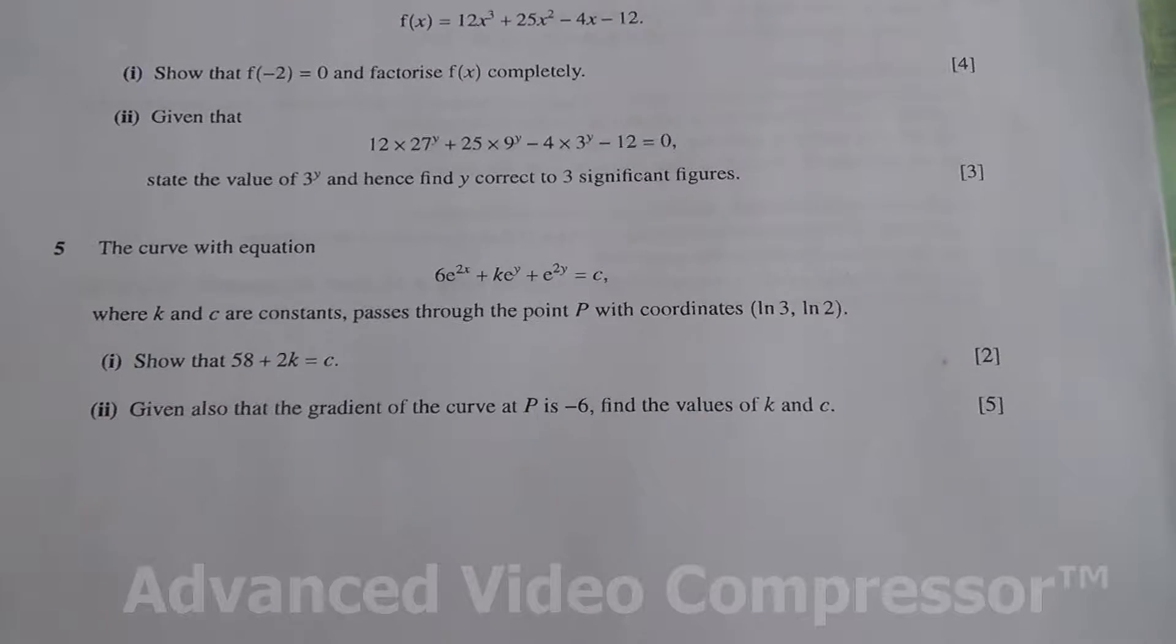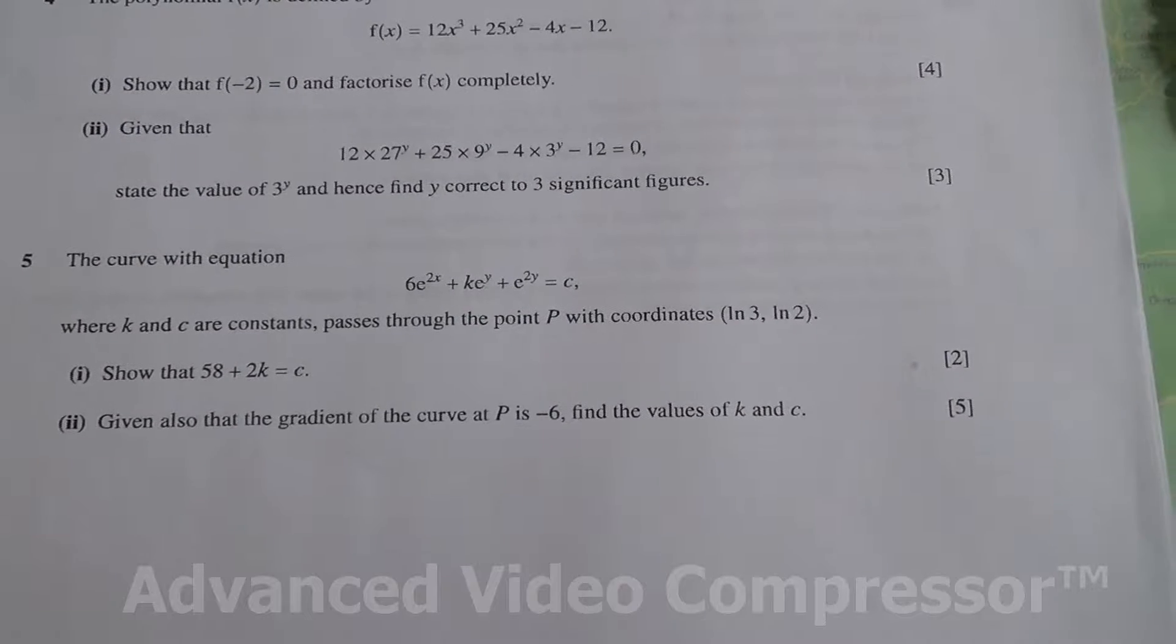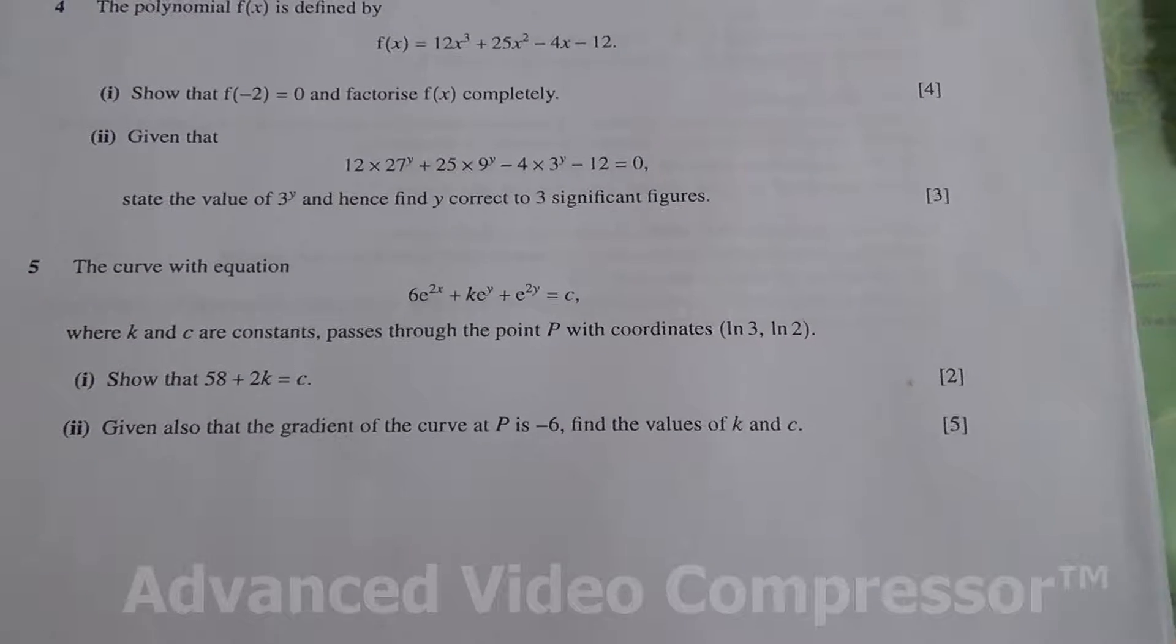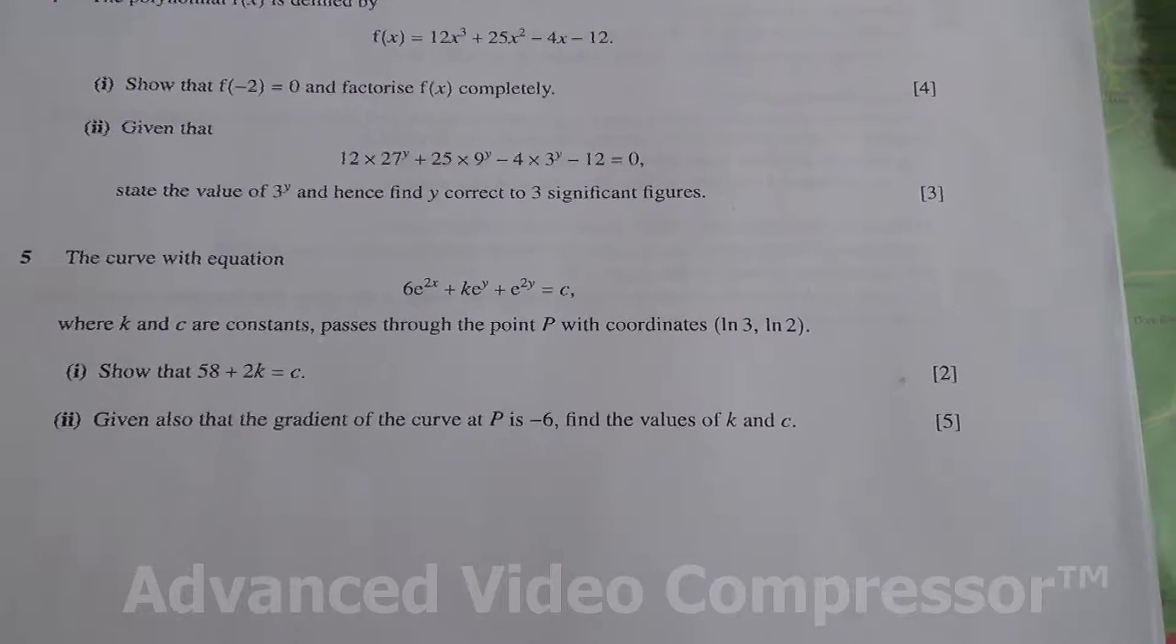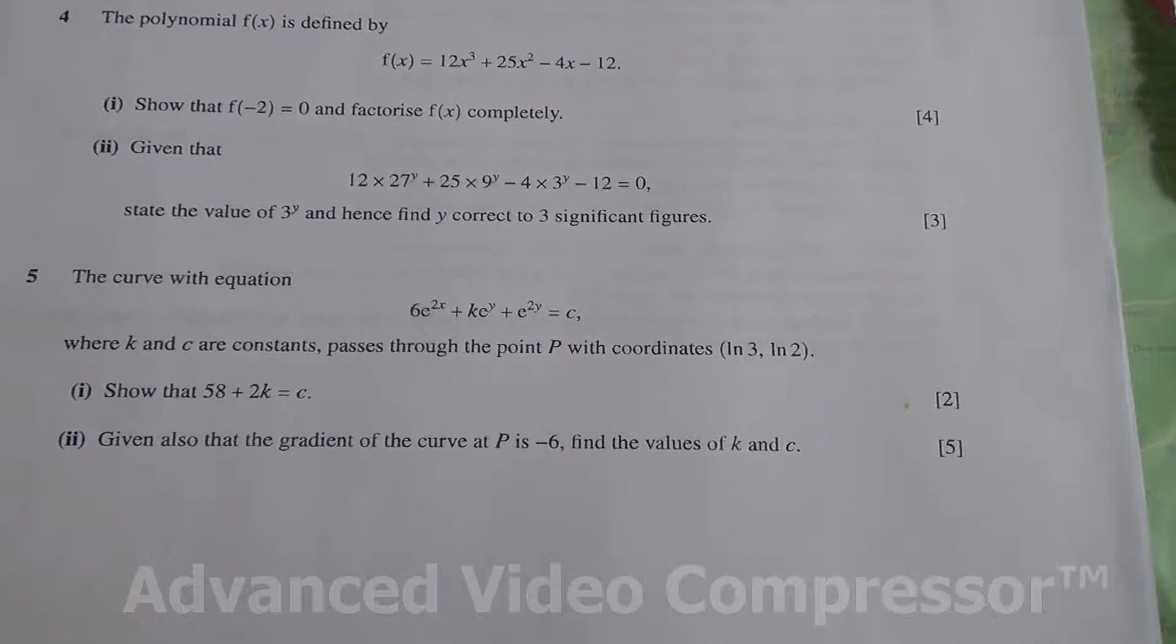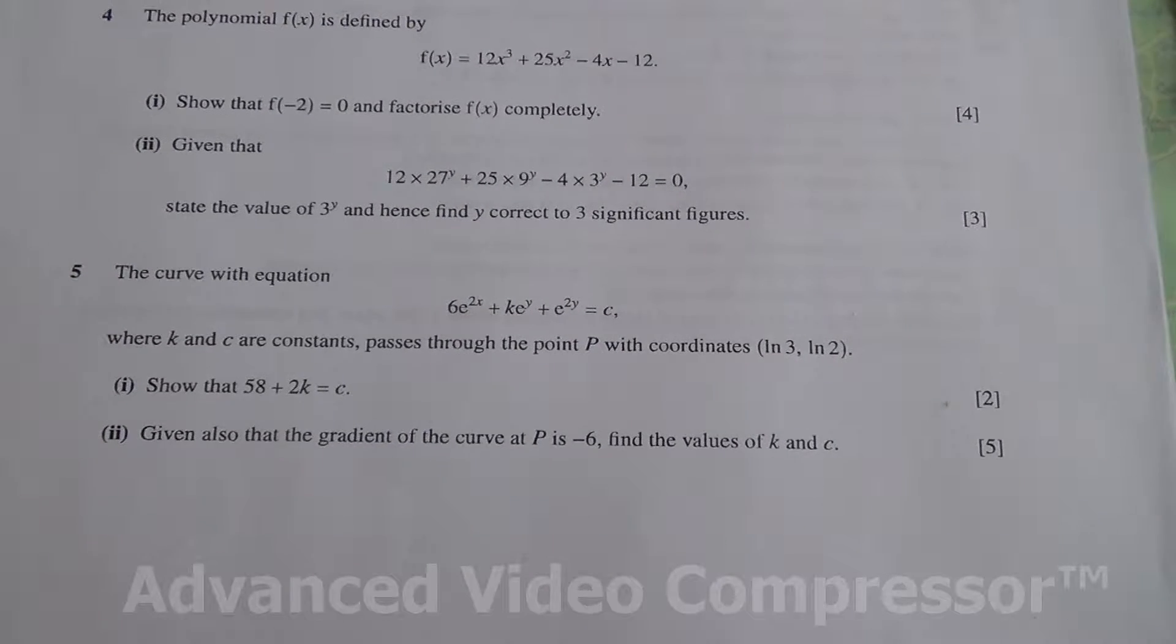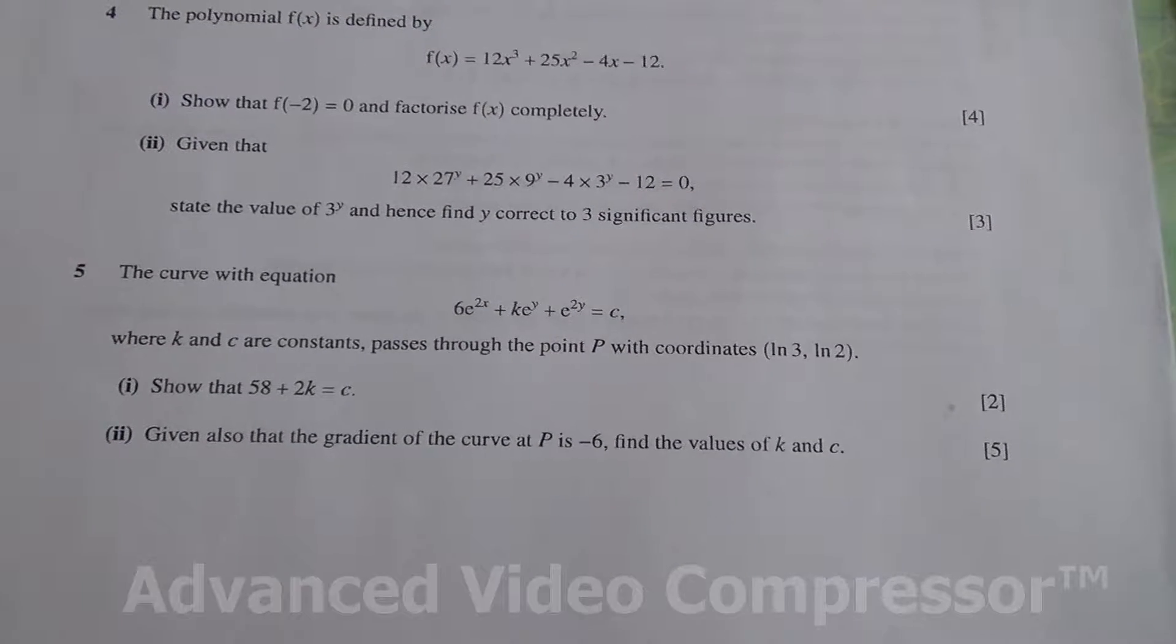Alright, question number 5. The curve with equation 6e to the 2x plus ke to the y plus e to the 2y is equal to c, where k and c are constants, passes through the point P with coordinates ln 3 and ln 2. Show that 58 plus 2k is equal to c. Second part, given also that the gradient of the curve at P is minus 6, find the values of k and c.